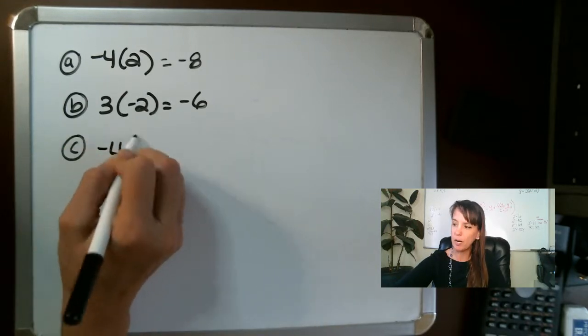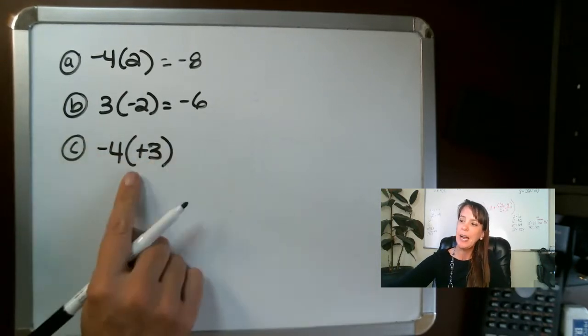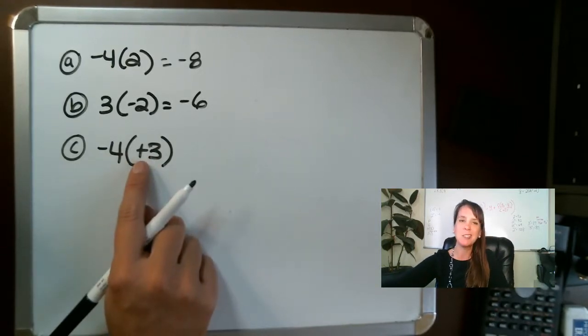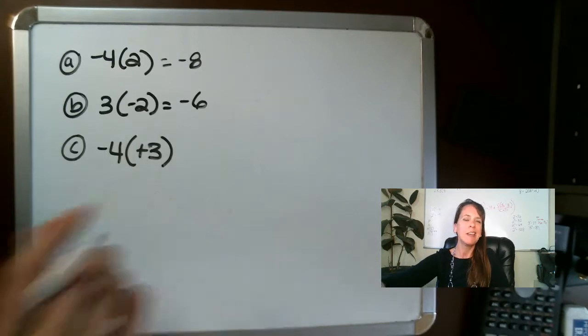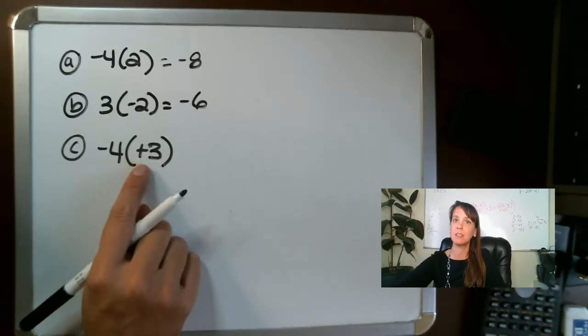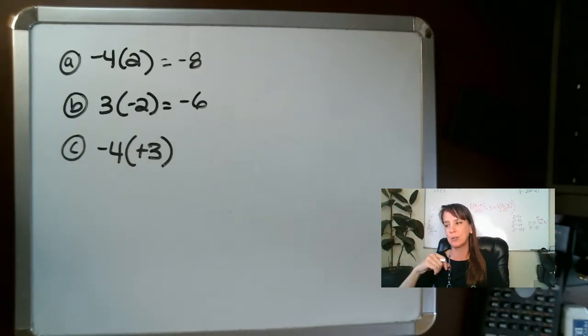For C, we have negative four and positive three. This is plus three. However, we're doing the multiplication here. Okay? That plus is just saying that it's a positive number. Saxon in this book only really does that plus in front of positive numbers for the next few lessons, and then it goes away.